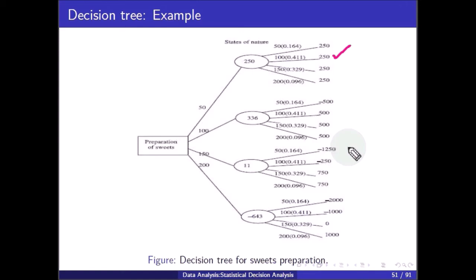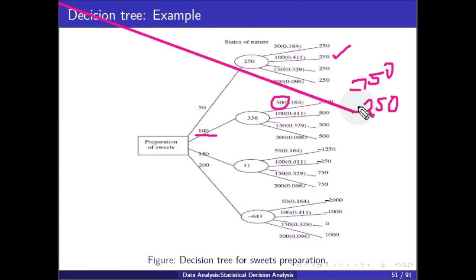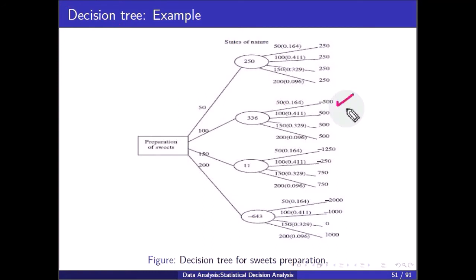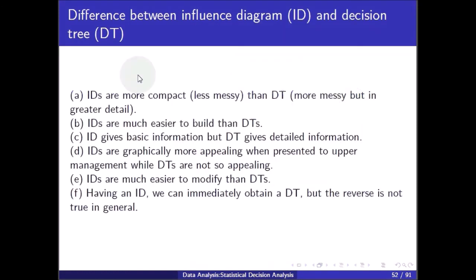For every branch and decision alternative, the expected monetary value (EMV) is calculated and displayed in each circle node. The optimum EMV is the one that gives the highest monetary value. The expected returns for preparation quantities of 50, 100, 150, and 200 suits give values of 250, 336, and 643 respectively — please refer to the previous video for full calculations. The maximum EMV indicates you should prepare 100 suits per day.